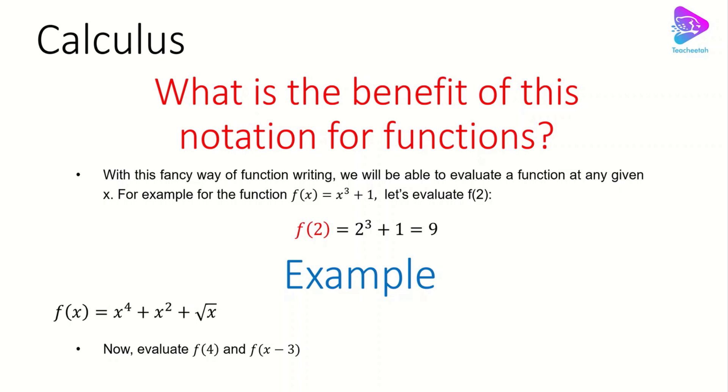So the only thing that we have to do is instead of x we need to plug in 4. So instead of x we will have 4, so it's going to be 4 to the power of 4 plus 4 to the power of 2 plus square root of 4. Then we will have 256 the first term, plus 16 the second term, and square root of 4 is 2, which is the third term, and the final answer is going to be 274.